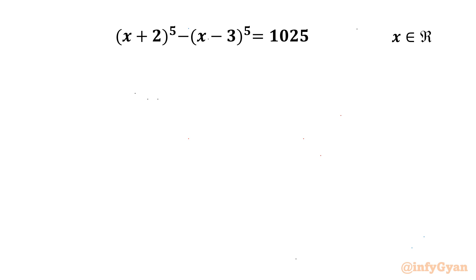Welcome to Infigyan, my dear friends. In this video we will be solving another very interesting question from algebra: (x+2)⁵ minus (x-3)⁵ equals 1025, and we will be solving for the real values of x.